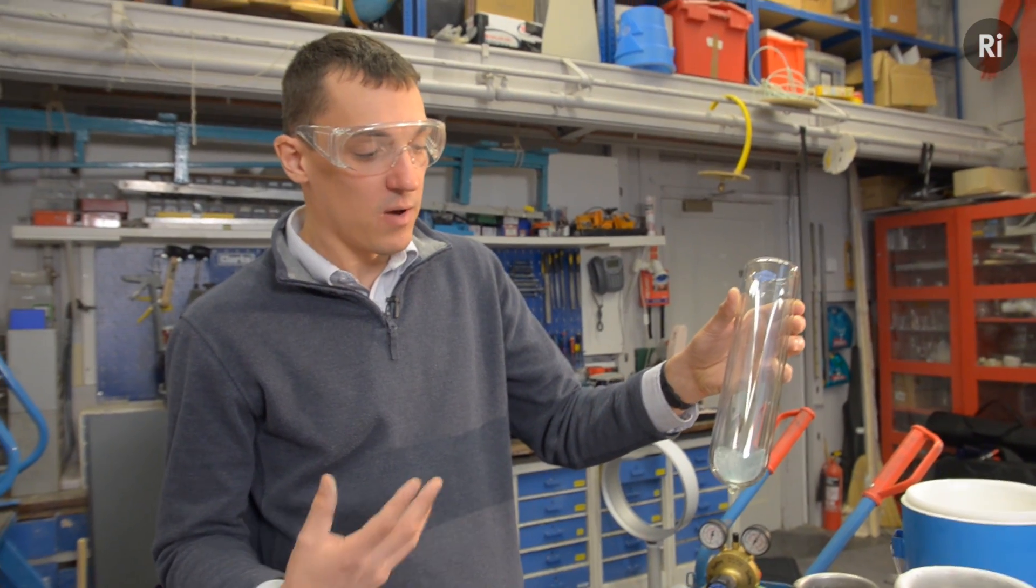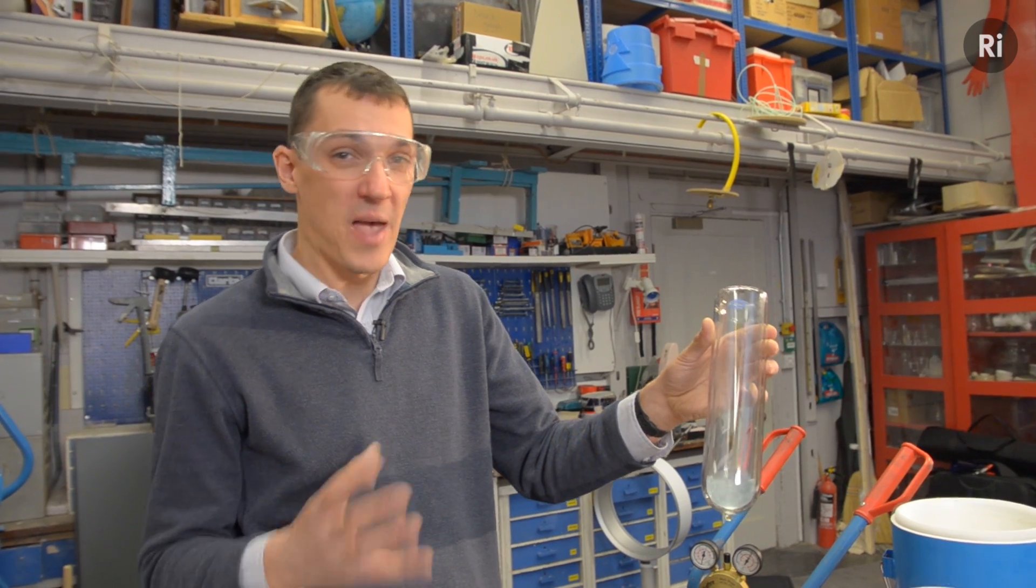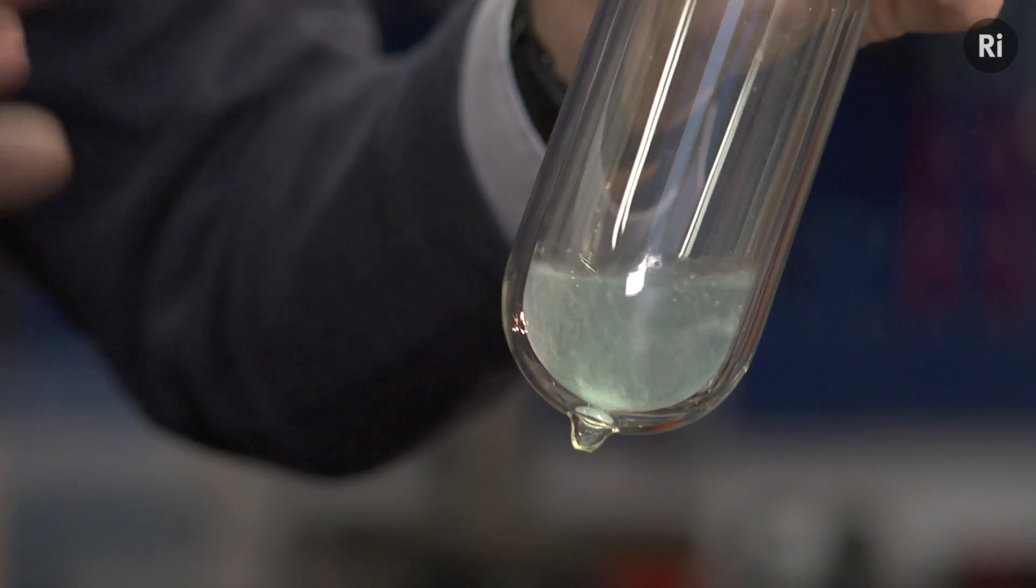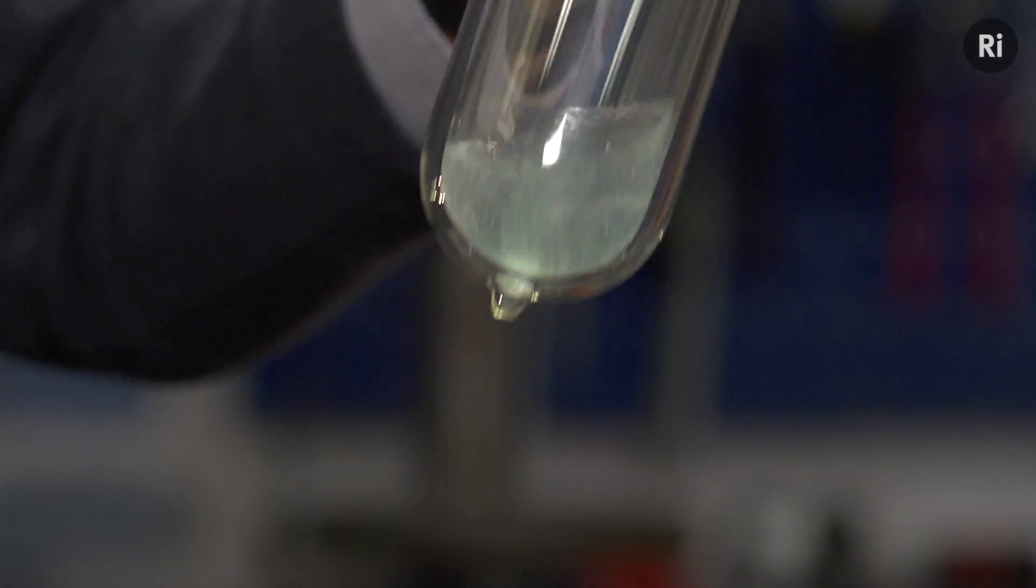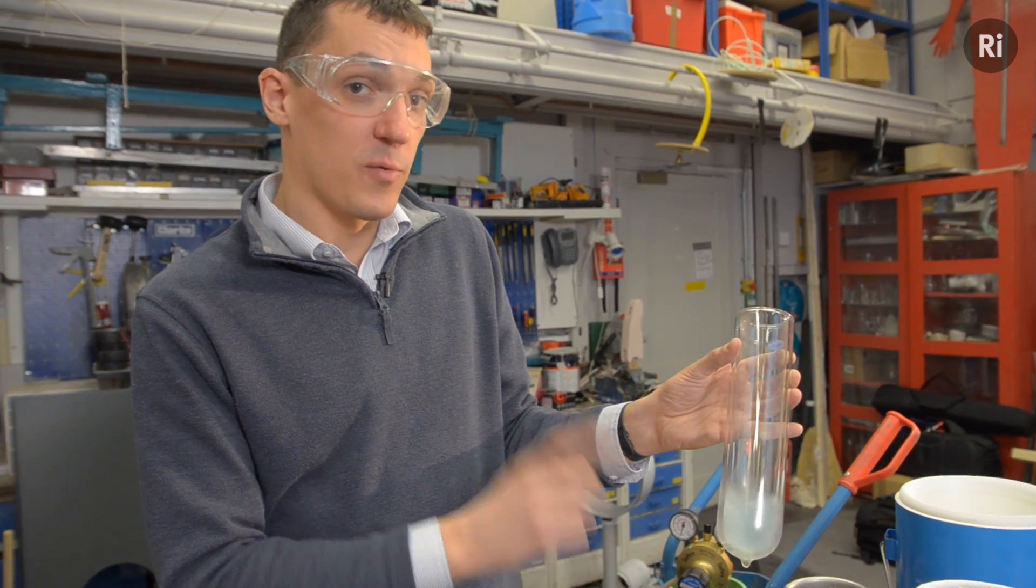What that is actually is that there are unpaired electrons. Electrons usually like to pair up, but in oxygen there are a couple that doesn't happen to, and we call them unpaired electrons. And there's actually another unusual property of oxygen that arises from the unpaired electrons, which I want to show you now.